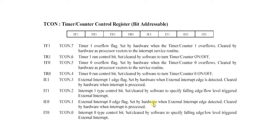IT1 means external interrupt 1 signal type control bit. It is set by the program to enable external interrupt 1 to be triggered by a falling edge signal. It is set to 0 by the program to enable a low-level signal on external interrupt 1, and set to 1 to enable the falling edge trigger.